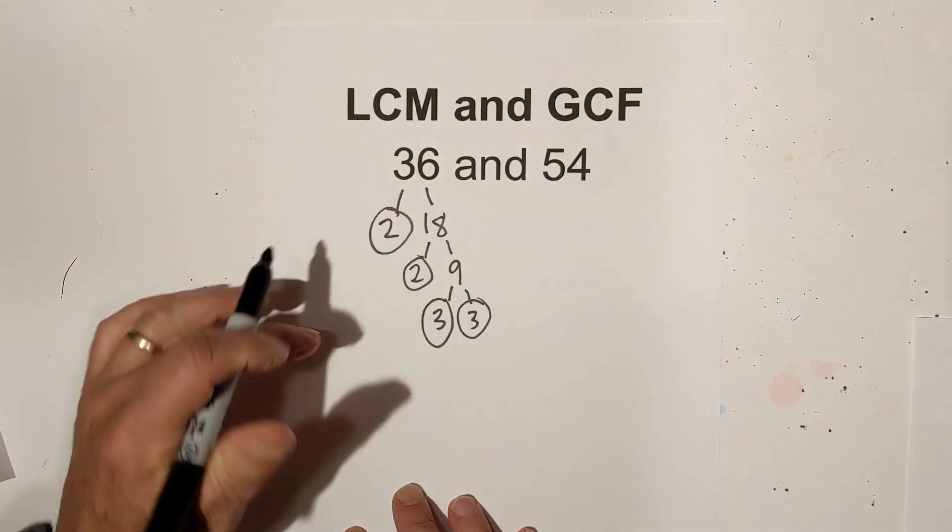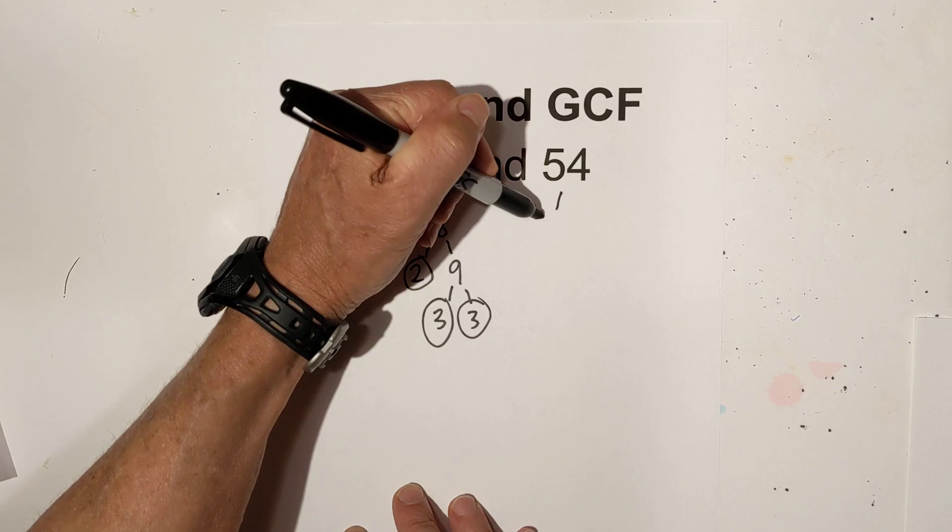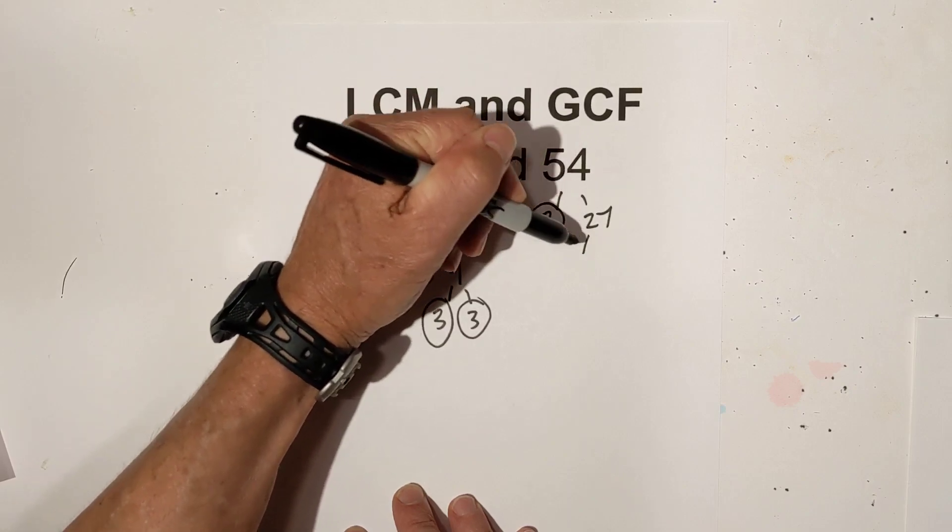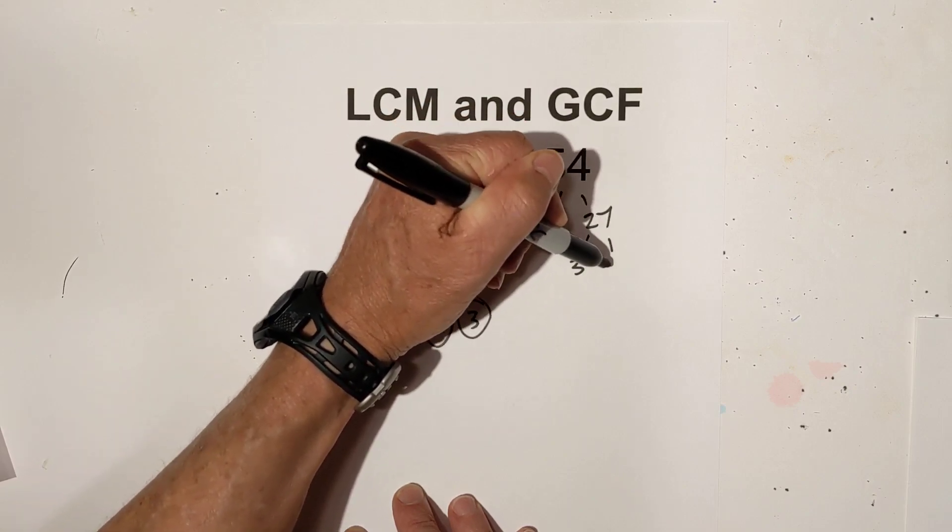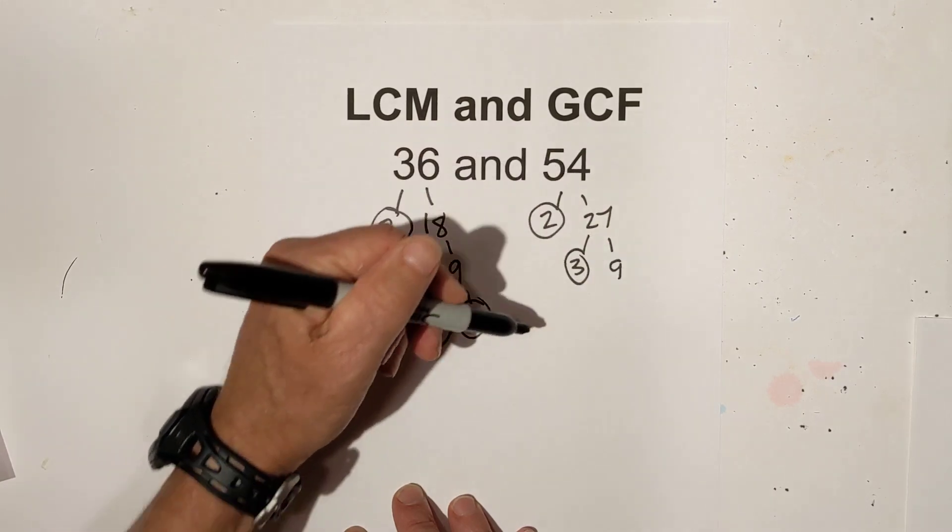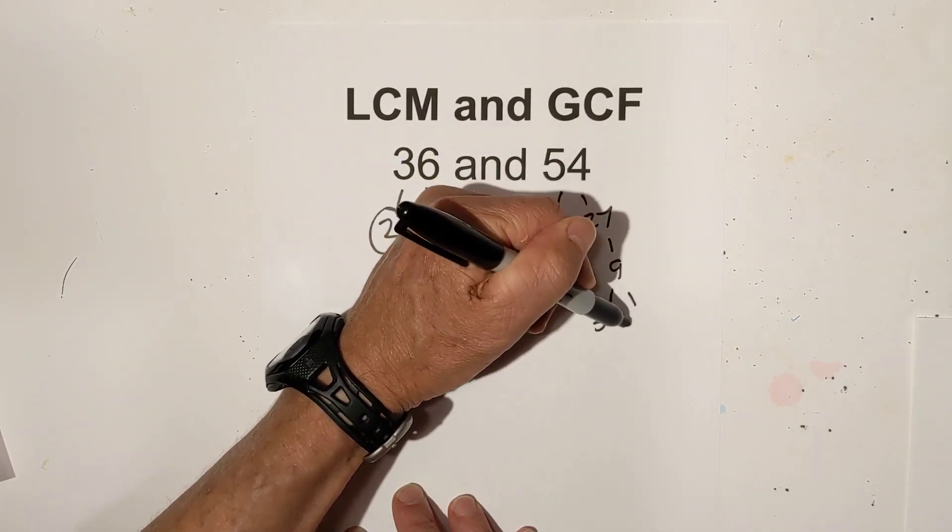There's 36. For 54, we go 2, 27, and then 3, 9. I'm circling the primes: 3 and 3.